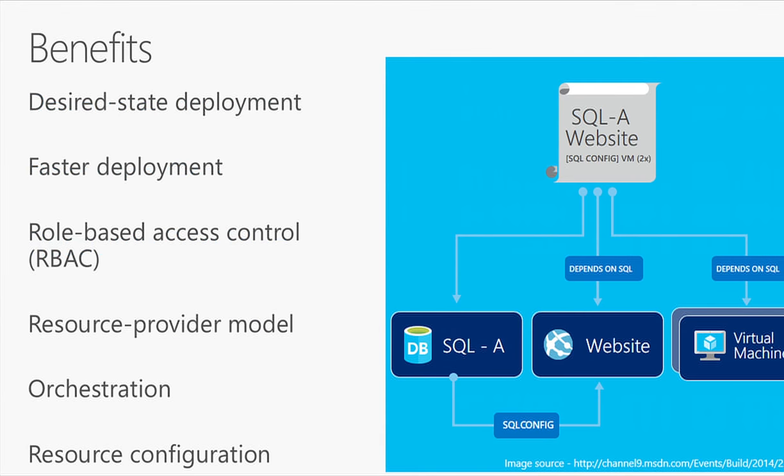Why is this such a big thing in Azure? You get desired state deployment — similar to DSC or Chef, but for managing assets in Azure. It's similar in some ways to CloudFormation with AWS. Resources that aren't dependent on each other can deploy in parallel, whereas in the classic environment they deployed serially, so you can deploy bigger environments much faster.